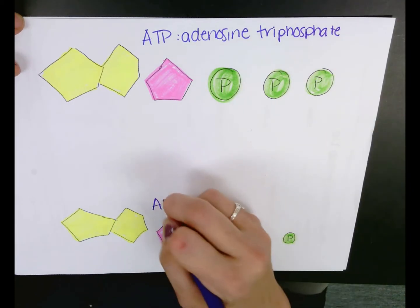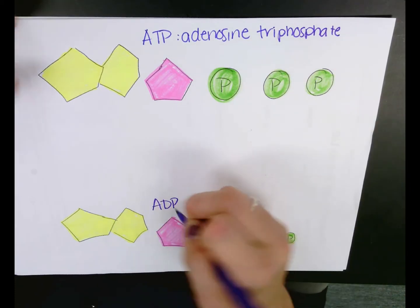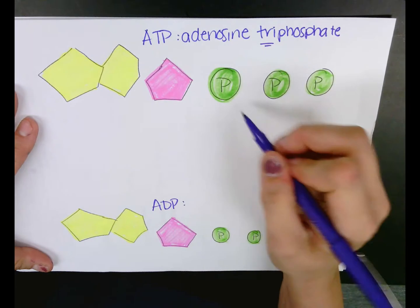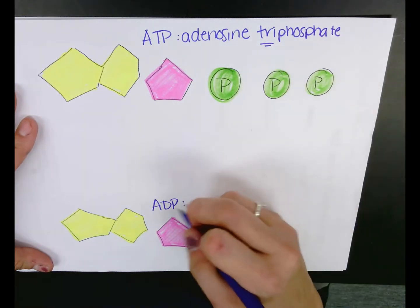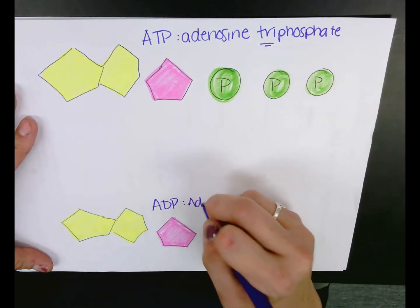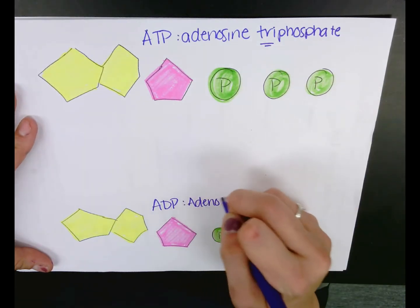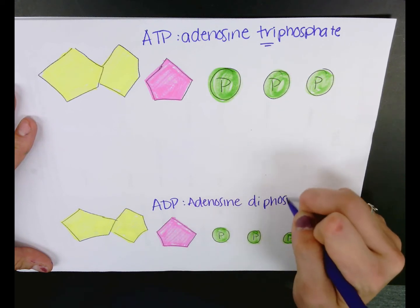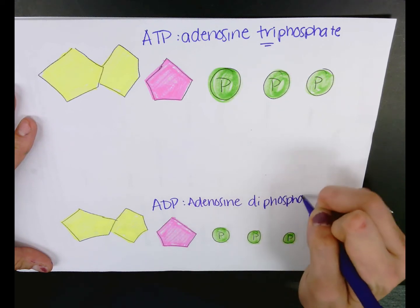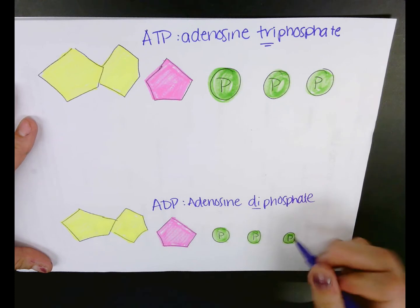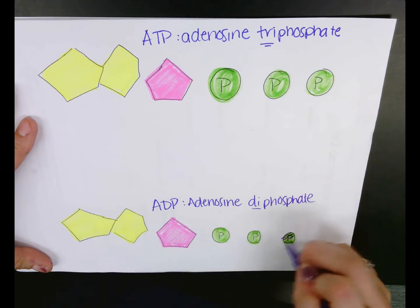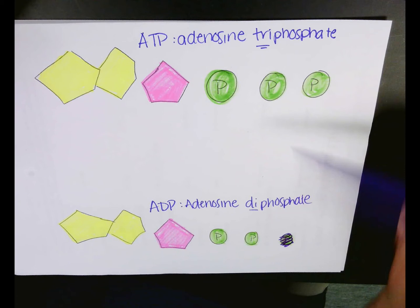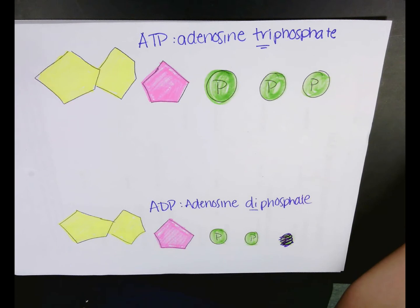Down here we have ADP. Do you see how ATP says 'tri'? We've got one, two, three phosphates. Down here we've got ADP, adenosine diphosphate. I messed up — this one extra phosphate should not be there. So we've got two phosphates down here and three phosphates up here.